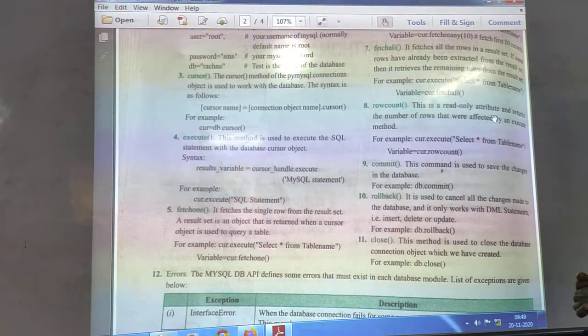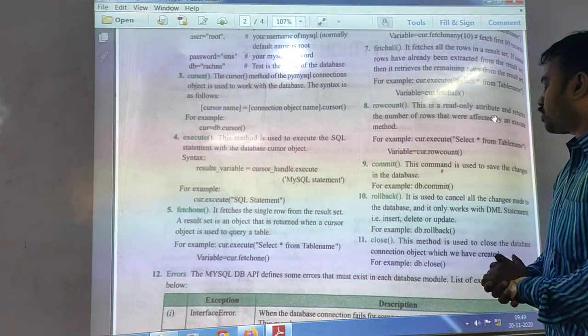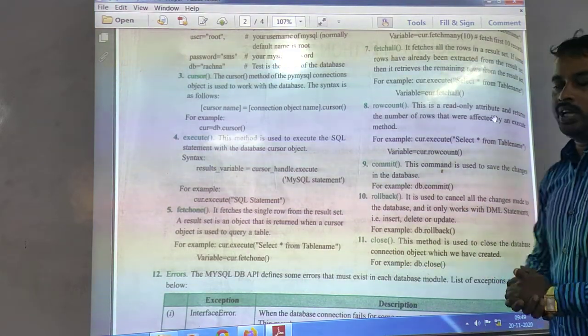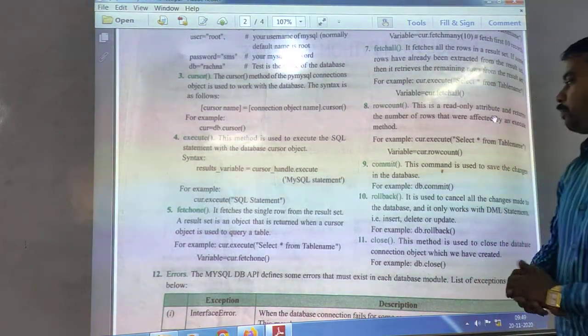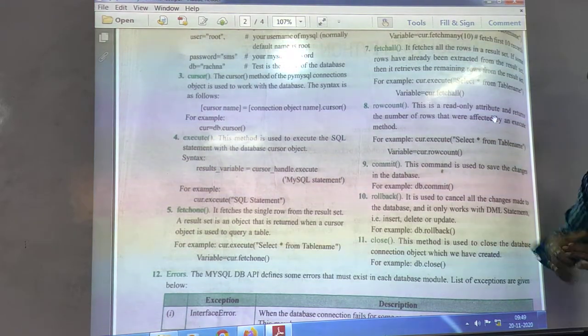You write select star from table name, then you write variable equals to cursor.row count. How many rows are there? That only read-only methods can be executed from this particular section.